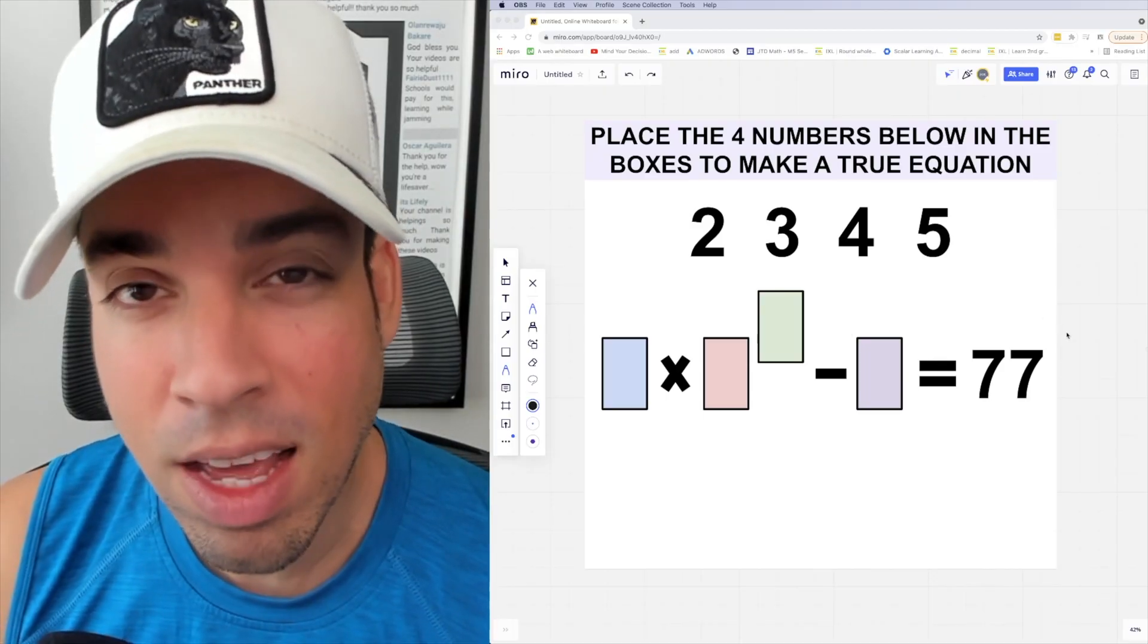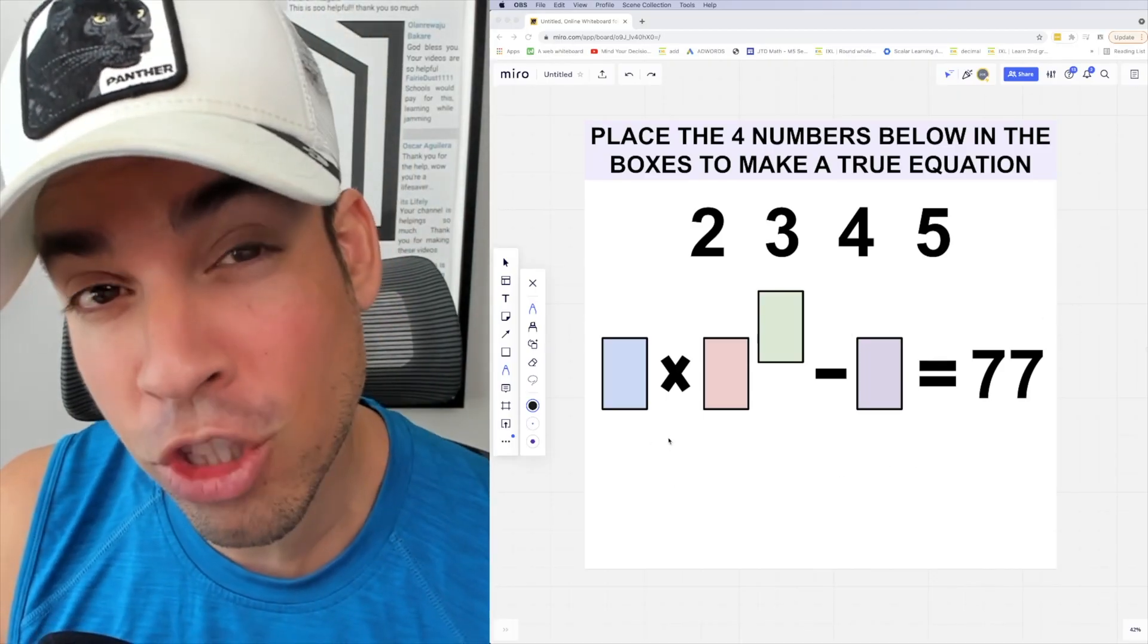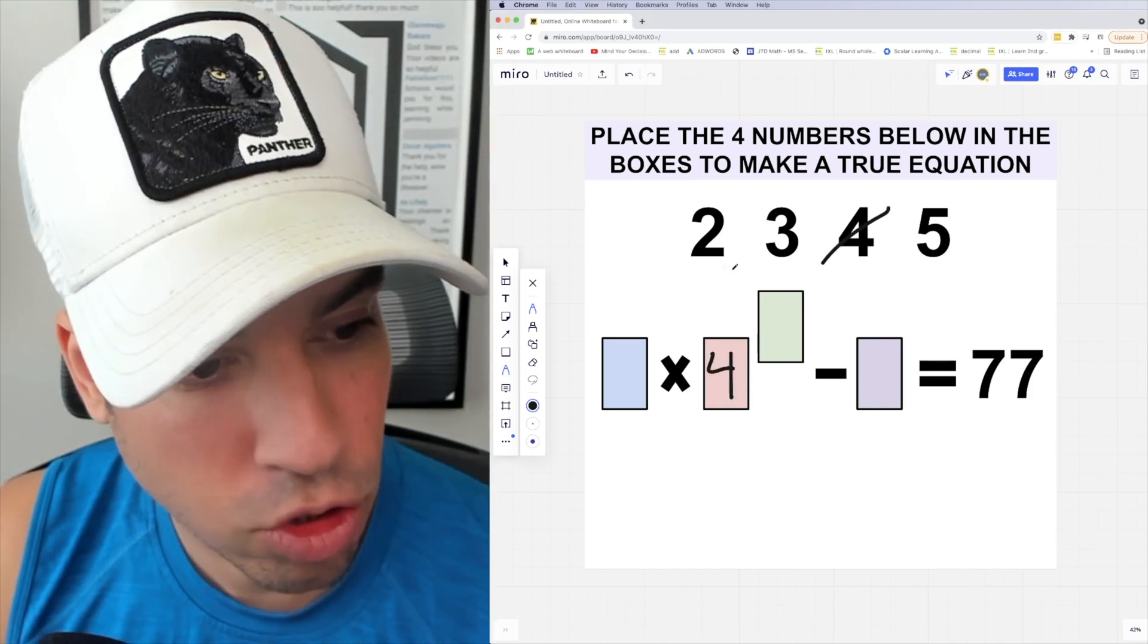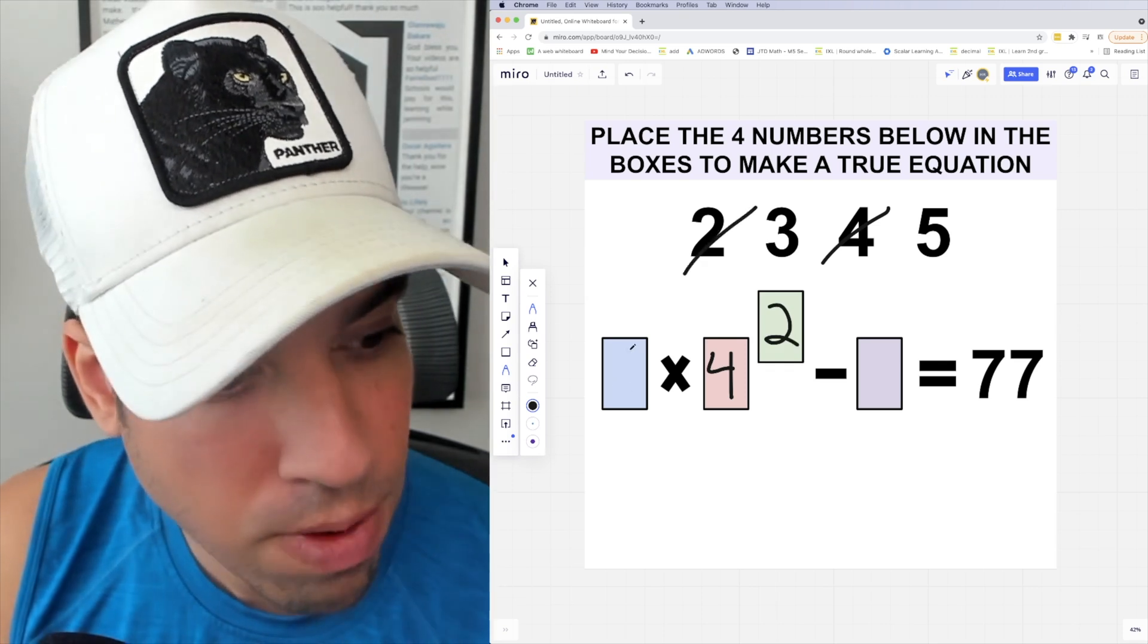With a puzzle like this, there's going to be a lot of trial and error, but I'm going to show you how to place the numbers correctly. We're going to place the four here, the two here, the five here, and the three here.